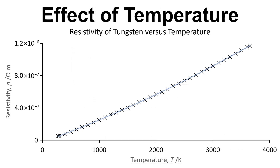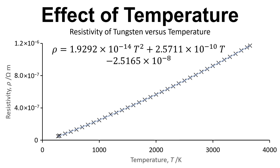Looking at this graph, we can also see that resistivity depends on temperature. This graph shows the resistivity of tungsten versus temperature, and what we can do is fit a polynomial to that data to get an equation that tells us the resistivity of tungsten at any given temperature. Where we have T squared and T in that equation, we simply substitute the temperature value in Kelvin, and we can calculate the resistivity for any temperature in the range shown on the graph.